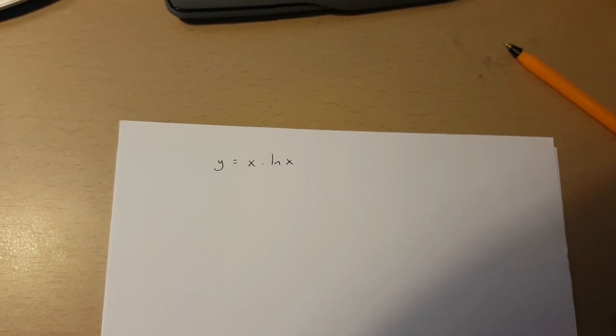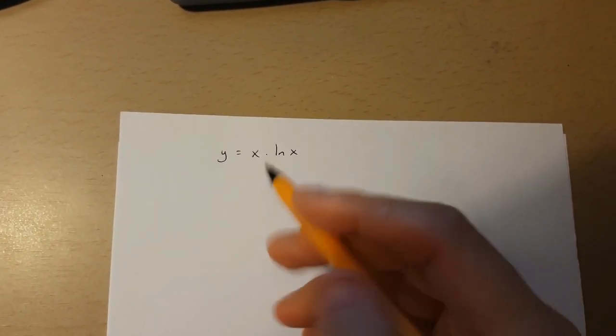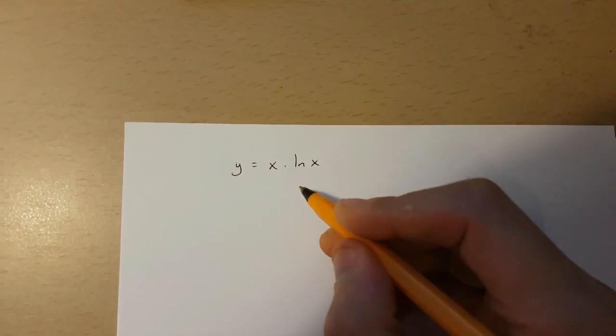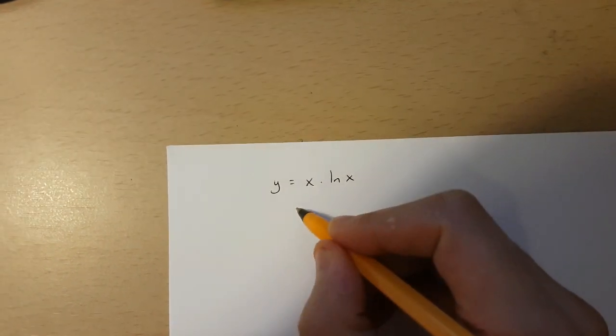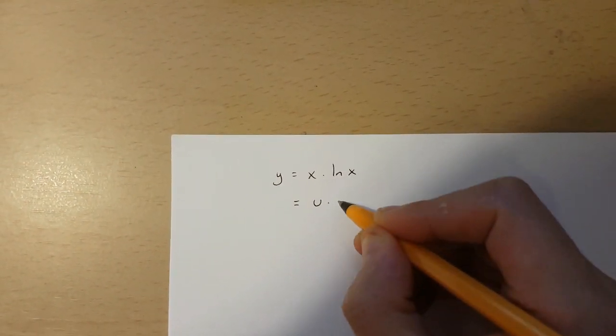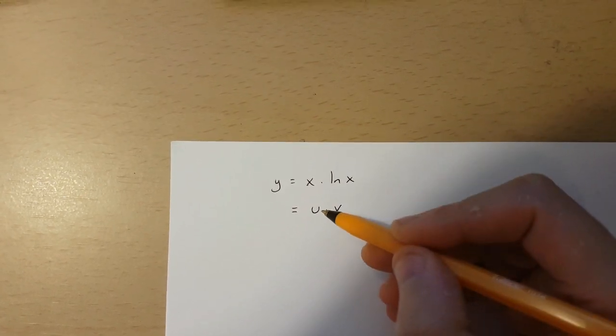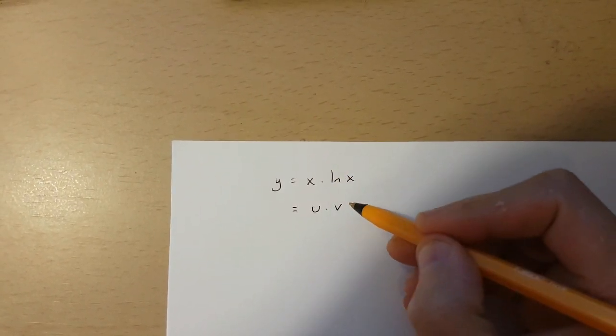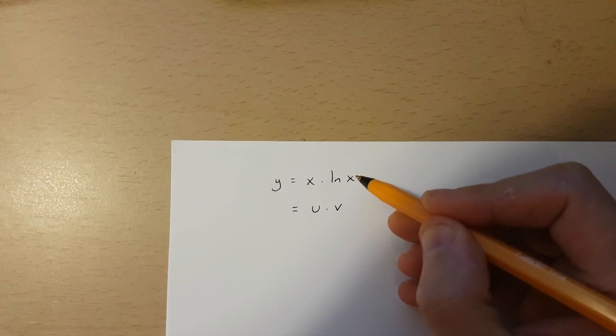Now, over here I've got y equals x times ln x. I'm going to transform it into u times v, where u is x and v is ln x.